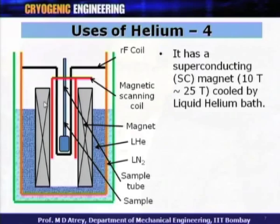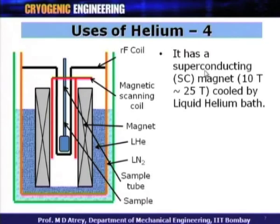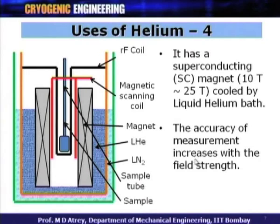For a good NMR, we need a very high magnetic field, which is why we use a superconducting magnet that allows a large current to flow, generating very high magnetic fields of 10 to 25 Tesla. If you want a 10 to 25 Tesla electromagnet otherwise, it is not possible. The accuracy of measurement increases with field strength, and the chemical structure can be very clearly seen in these cases.